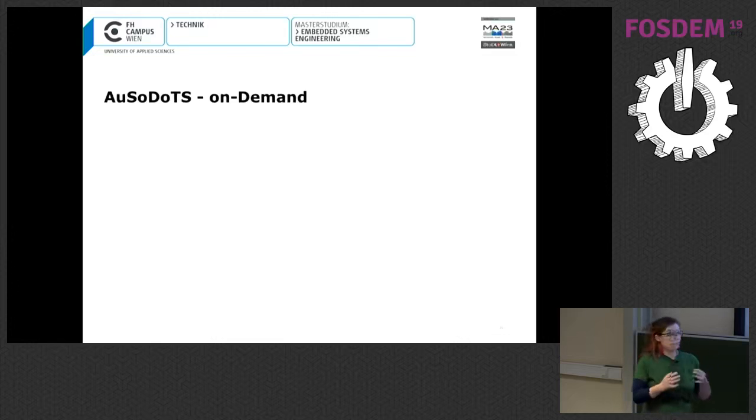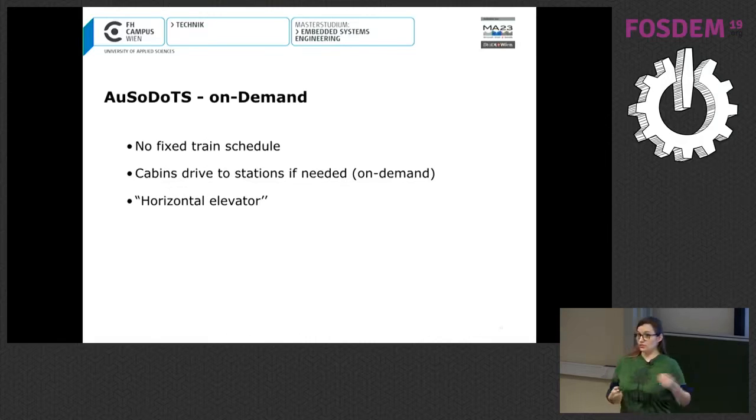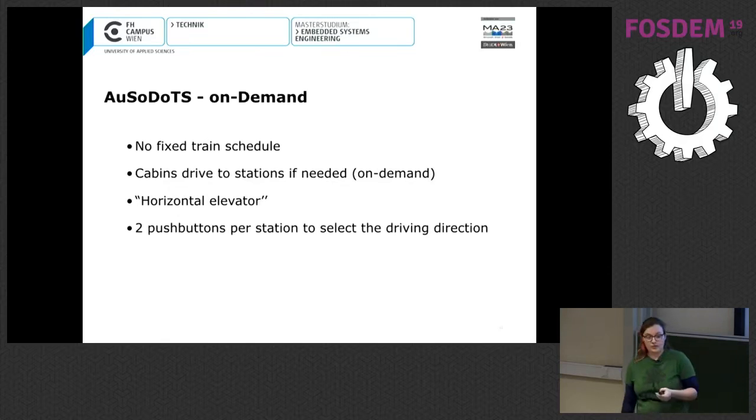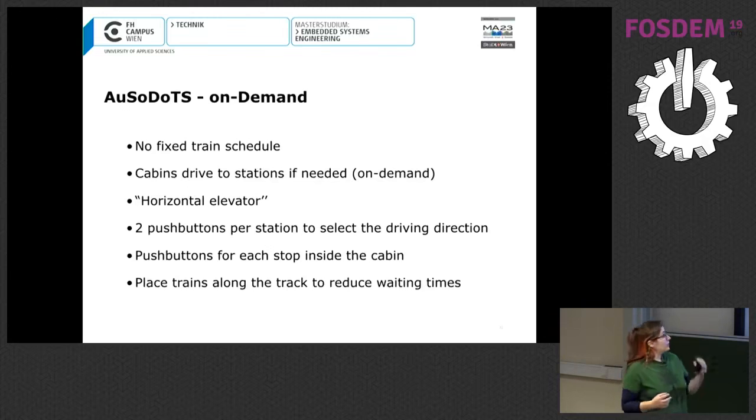What means on demand and what is so special about on demand? Normally, trains have a fixed schedule. This is not the part of our system. In our system, a cabin drives only to a station if somebody needs a cabin right now. It's like a horizontal elevator. So you press a button, a cabin is coming. There are two push buttons per station which decide in which direction you want to drive. And there are push buttons inside each cabin like an elevator where you can say, I want to go out here or I want to go out on the next station. And you have to place trains along the track to reduce waiting time because if you have two terminals in a very large distance from each other and somebody is calling a cabin in the middle of the track, this person doesn't want to wait half an hour for a cabin.